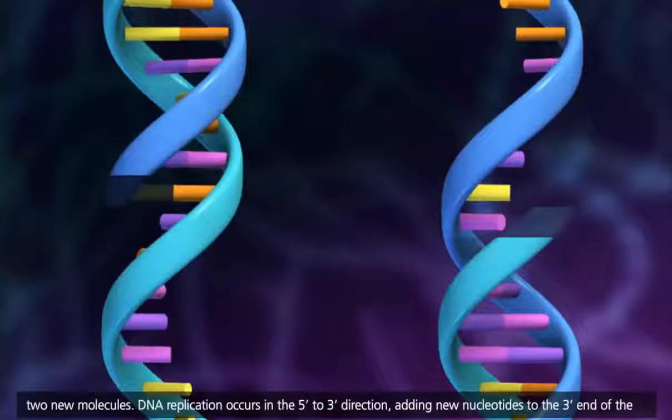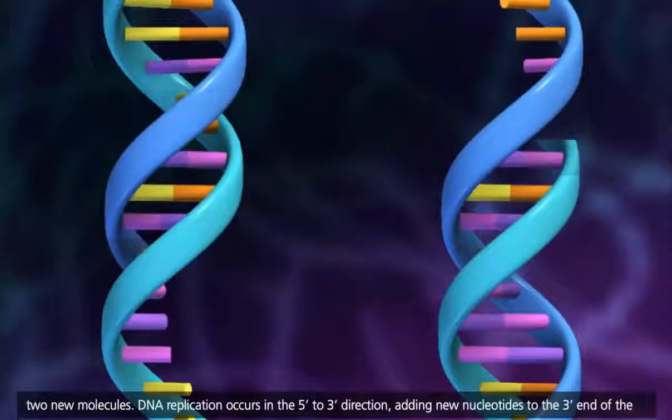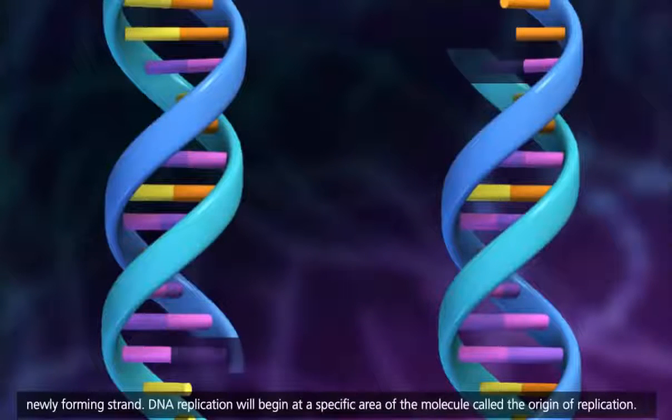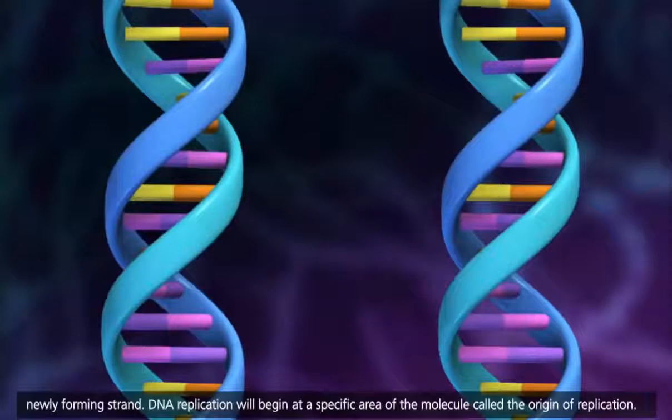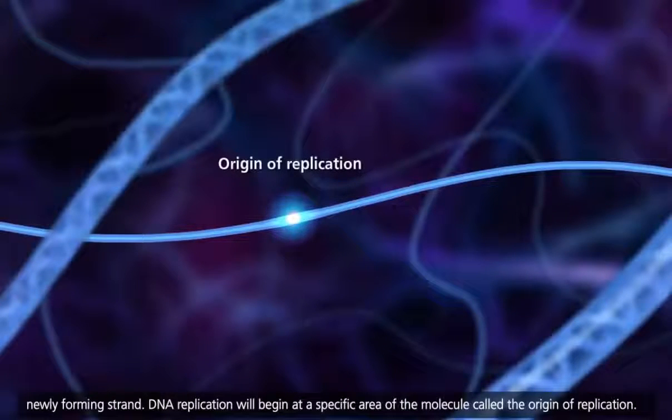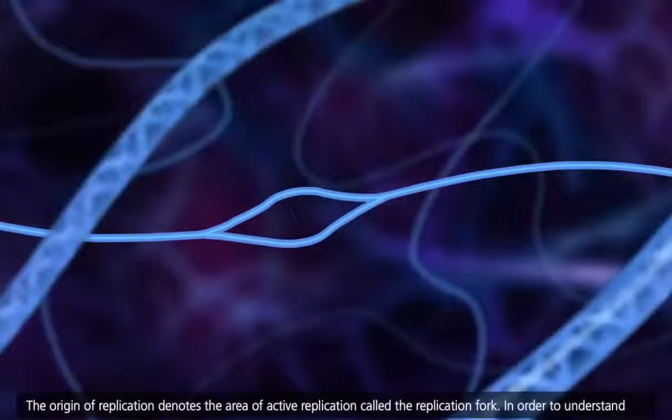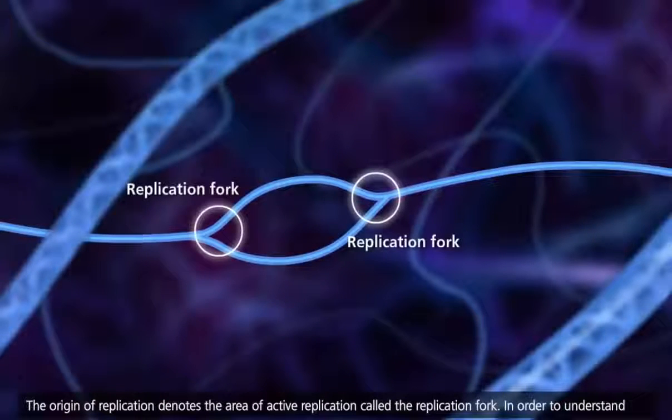DNA replication occurs in the 5' to 3' direction, adding new nucleotides to the 3' end of the newly forming strand. DNA replication will begin at a specific area of the molecule called the origin of replication. The origin of replication denotes the area of active replication called the replication fork.